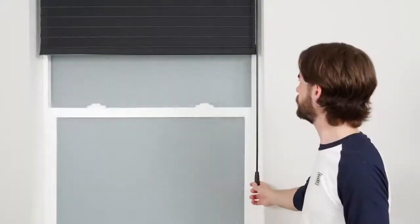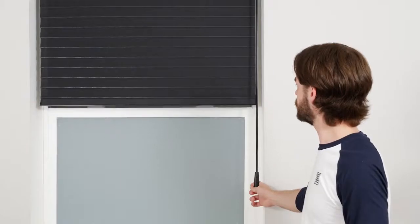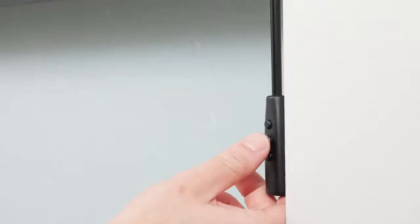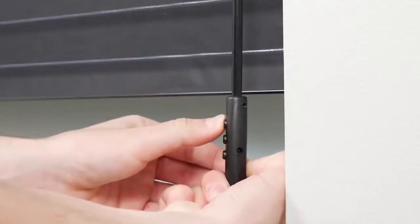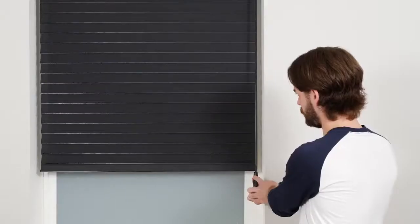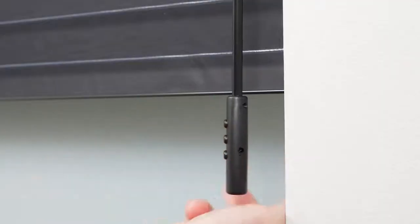You may also choose to program a favorite position for your shade, but it is not required. To do so, move the shade to your desired favorite position. On the back of the wand handle, press and hold the setting button and simultaneously press and hold the up button. Release both buttons when the motor beeps several times and your new favorite position will now be saved.